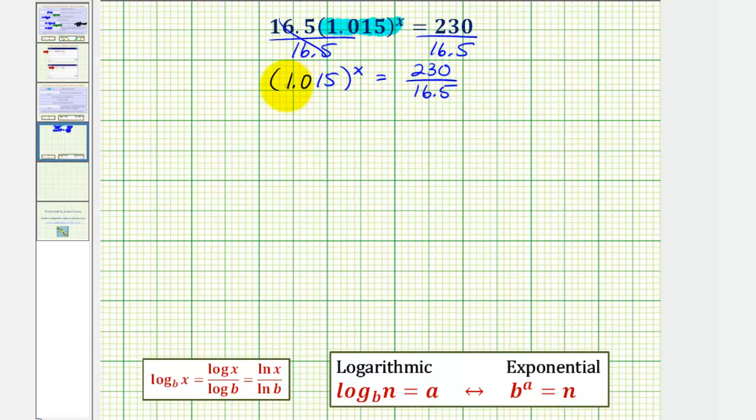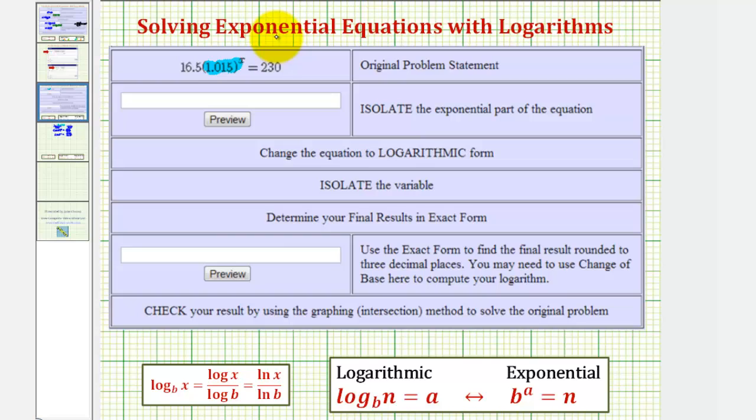But if we want, on the left here, we could drop the parentheses and just write this as 1.015 raised to the power of x equals this quotient. And our homework question is asking us for this equation here after we've isolated the exponential part. So we have 1.015 raised to the power of x equals the quotient 230 divided by 16.5.